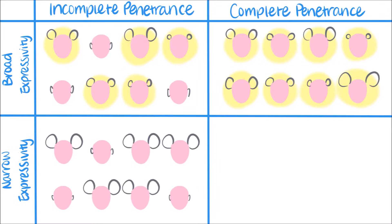Incomplete penetrance with narrow expressivity looks like this. Not everyone has the mouse ear phenotype, but those that do express the phenotype to about the same degree.